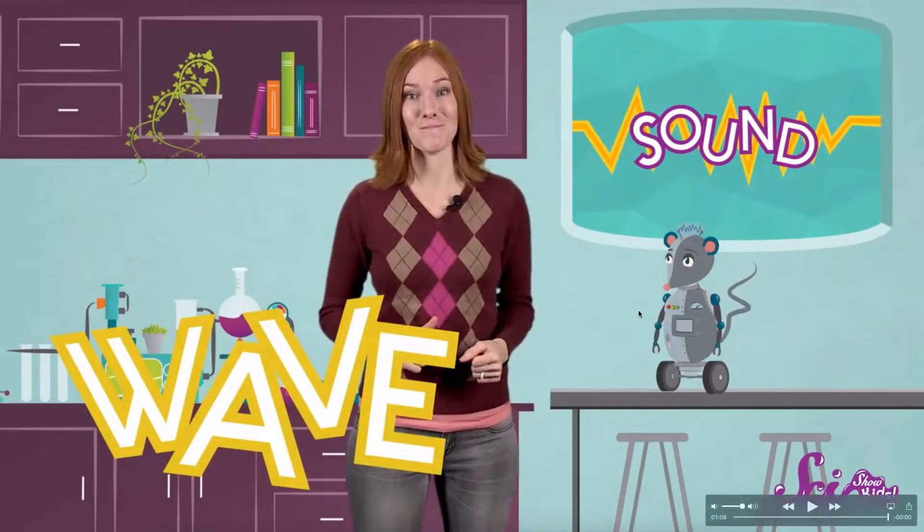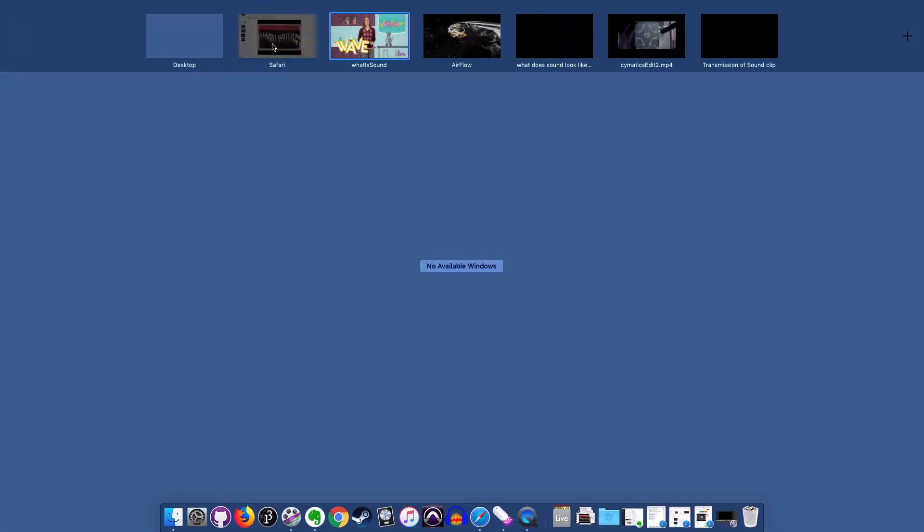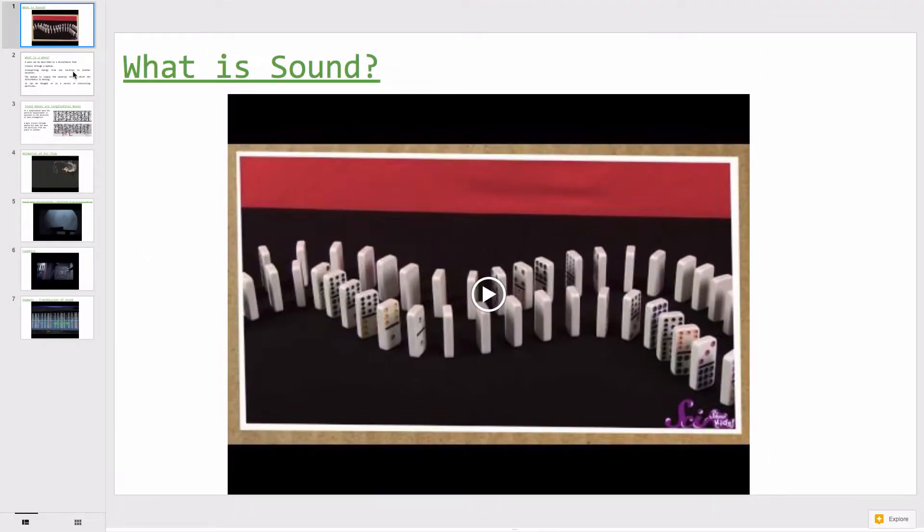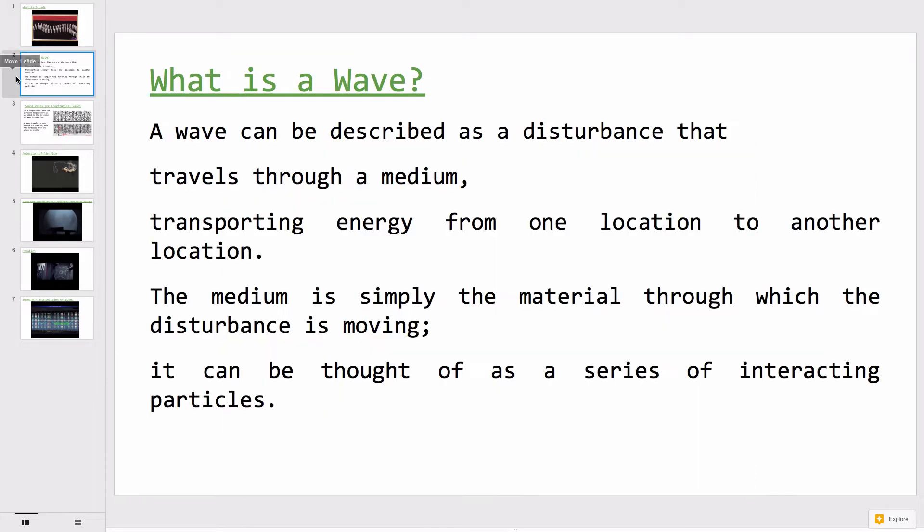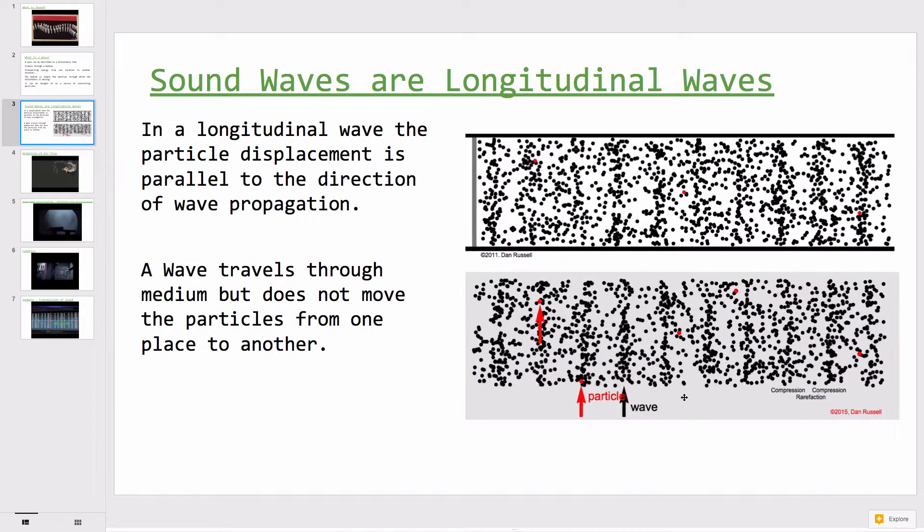So let's have a little closer look at what wave phenomena are. Sound moves through the air in a wave phenomenon, just like light and other things. A wave can be described as a disturbance that travels through a medium, transporting energy from one location to another location. The medium is simply the material through which the disturbance is moving, and it can be thought of as a series of interacting particles. So here's some interesting animations that show us this a little bit better.